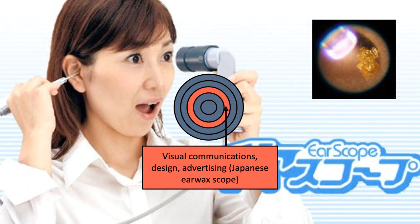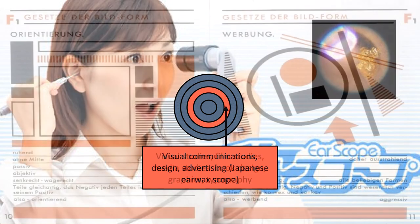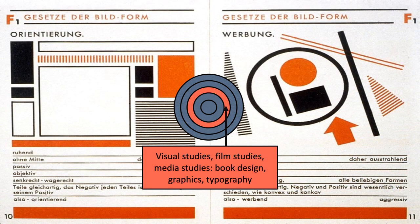Now going out one more circle beyond visual studies — things that visual studies doesn't study and neither does art history. This would include visual communications, design, advertising. This is a picture of one of these earwax scopes that were a fad in Japan — you can still buy them on the internet to look at your own earwax. The field of visual communications, design, and advertising — these are sometimes researched by people who identify as visual studies scholars, but in general they belong outside of visual studies in more practically oriented fields like visual communications, which is a department at the School of the Art Institute. Also more or less in this ring would be the study of book design, graphics, and typography, some of which are done in media studies and a little bit in visual studies as well.